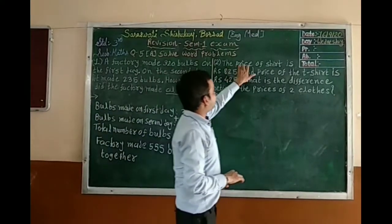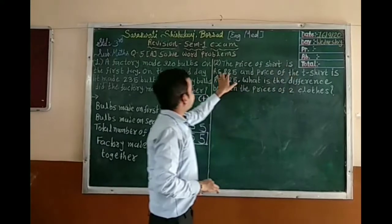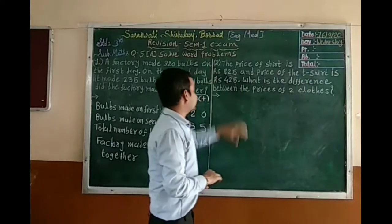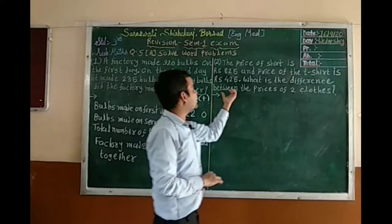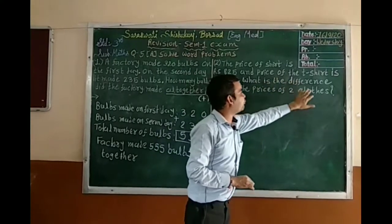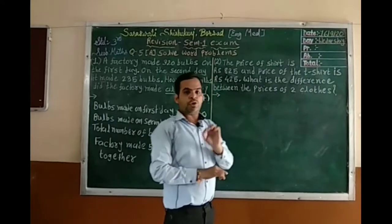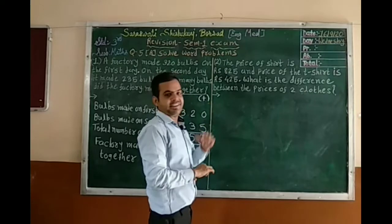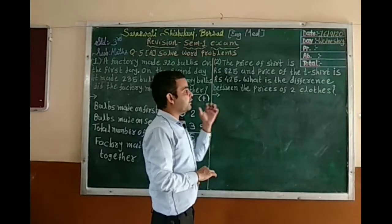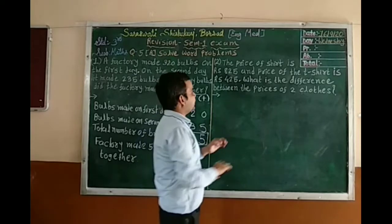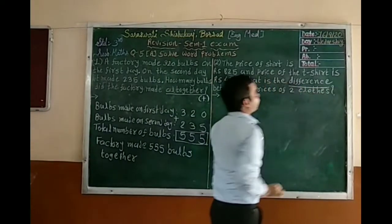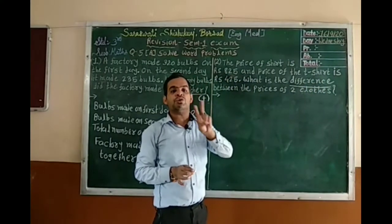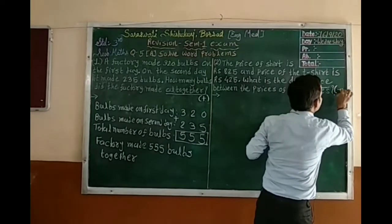Now let's see the second word problem. The price of a shirt is Rs. 825, and the price of a picture is Rs. 425. What is the difference between the prices of the two items? In this question, the cost of the shirt is given and the cost of the picture is given. The keyword here is 'difference' — difference means we have to find the difference between two things, so we have to do subtraction.